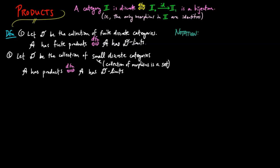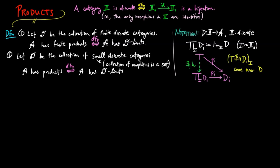For notational convenience, given a diagram of shape I in A with I discrete, we use this notation to describe the product. This means that if we are given another cone over D, there is a unique factorization H of this cone via the product.